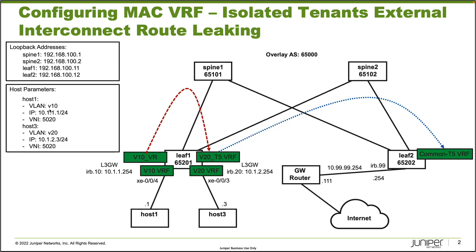Host 1 is using VLAN V10, IP address 10.1.1.1, and VNI 520 — which might seem a little strange if you've gone through my other learning bytes with MacVRF, but I'll explain that. Then we have VLAN V20 for Host 3, IP address 10.1.2.3, and VNI 5020.